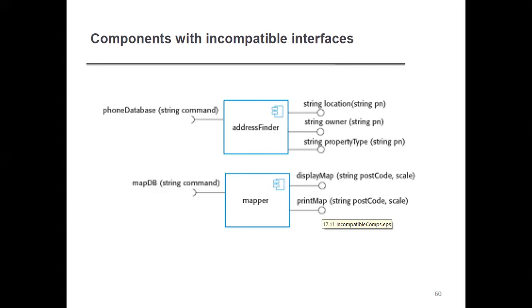When we have incompatible interfaces, they need to be addressed. It is not always necessary for components to be compatible. At the time of integration, we have to account for compatibility — they can be incompatible, and this must be resolved during component association and integration.